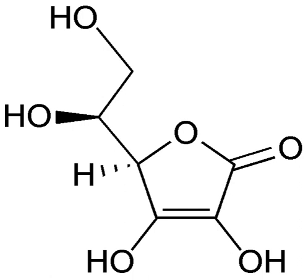As intermediate steps, the reduced carbon compounds are used to reduce nicotinamide adenine dinucleotide to NADH, which then contributes to the creation of a proton gradient, which drives the synthesis of adenosine triphosphate and is maintained by the reduction of oxygen. In animal cells, mitochondria perform similar functions.